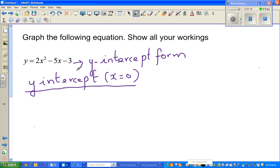So if x is equal to 0, this will become 0. 2 times 0 squared is 0, and this would also become 0. So you can basically ignore these two. The y-intercept is negative 3. Let me write that as a coordinate: 0, negative 3 is the y-intercept.